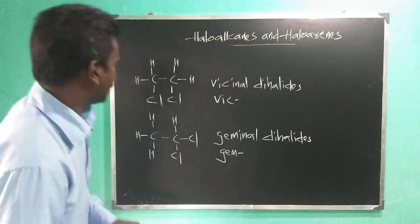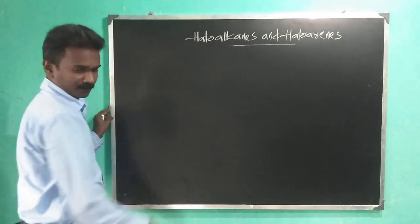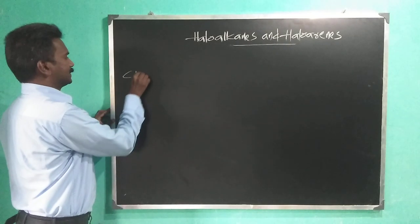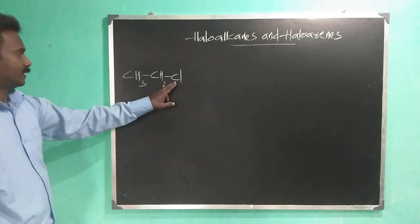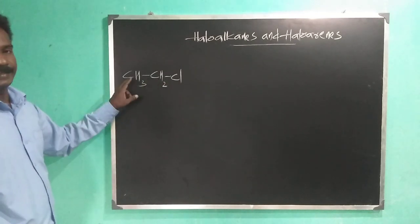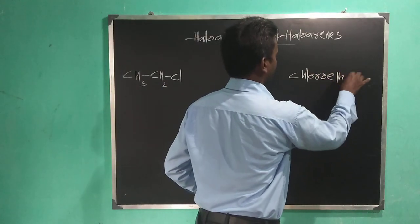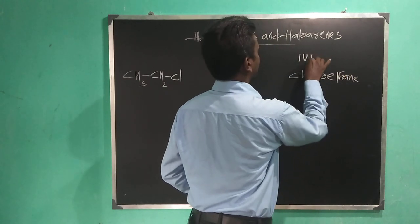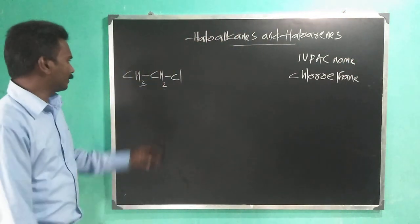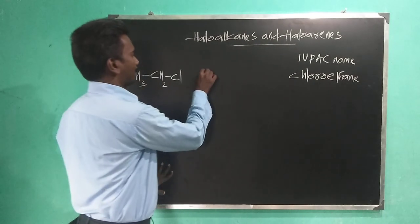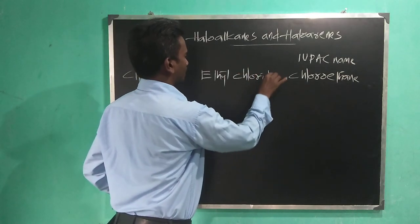Now we will go for some other examples of haloalkanes. Chloroethane has the common name ethyl chloride.